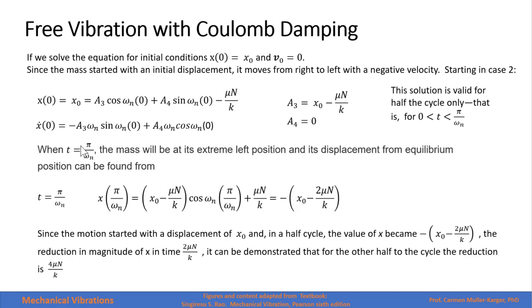This solution is valid for half cycle only. When t is equals to π/ωₙ, which represents half cycle, the mass will be at extreme left position, and the displacement from the equilibrium position can be found plugging in the number into the solution.